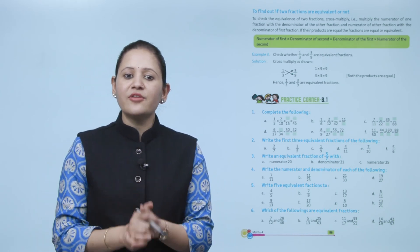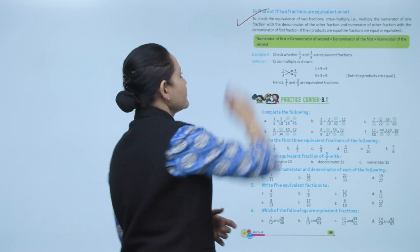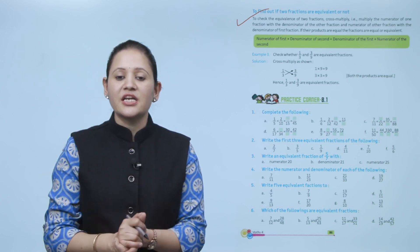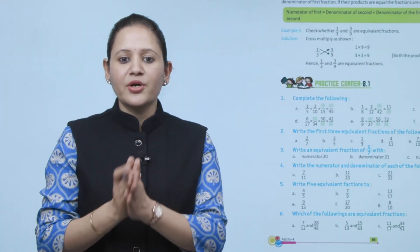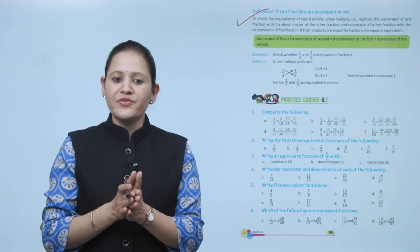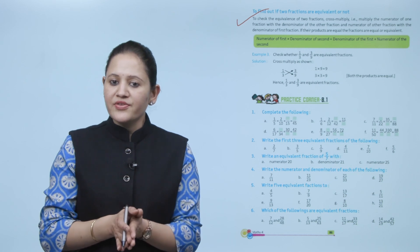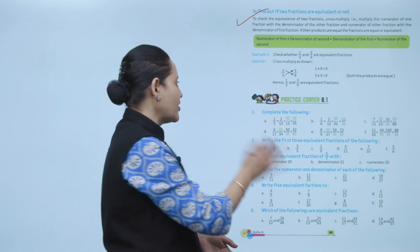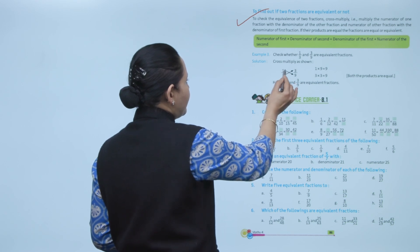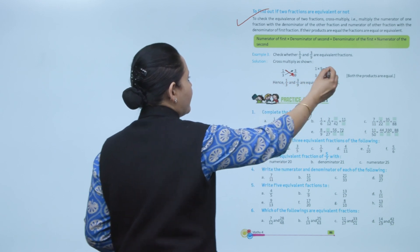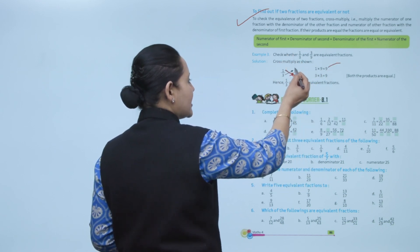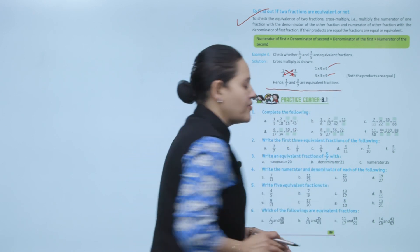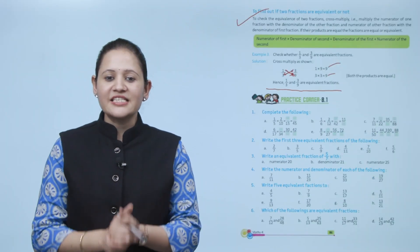Next is how to find out if two fractions are equivalent. To check, cross multiply: multiply the numerator of one fraction with the denominator of the other. If the products are equal, the fractions are equivalent. Example: check whether 1 by 3 and 3 by 9 are equivalent. 1 into 9 equals 9, and 3 into 3 equals 9. Since both products are equal, 1 by 3 and 3 by 9 are equivalent fractions. Next is practice corner 8.1.